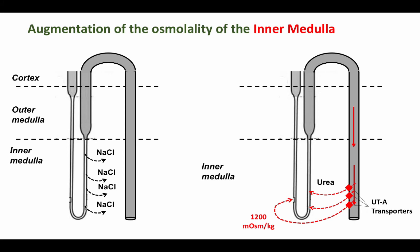Secondly, and most importantly, we have movement of urea down its concentration gradient into the interstitium, and this adds significantly to the medullary hypertonicity. Some estimates place it as high as 40 to 50 percent.